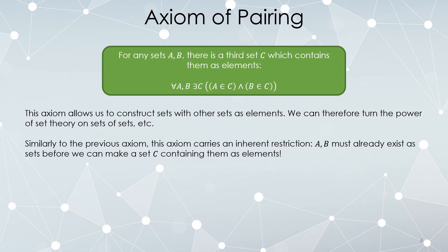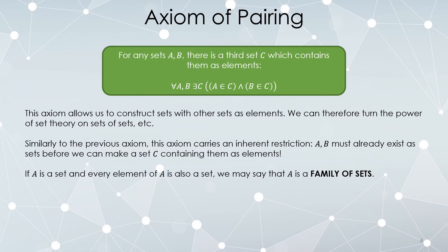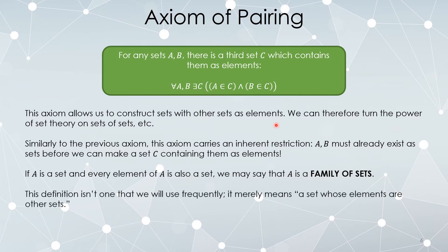The only axiom without a restriction was the first axiom of existence — there is a set — but that set had no special properties. This allows us to introduce one more definition: if every element of a set is also a set, you call it a family. So the axiom of pairing says there must exist something whose elements are sets — that's a family of sets. It's not a term we'll use very often, but it comes up when discussing these axioms.